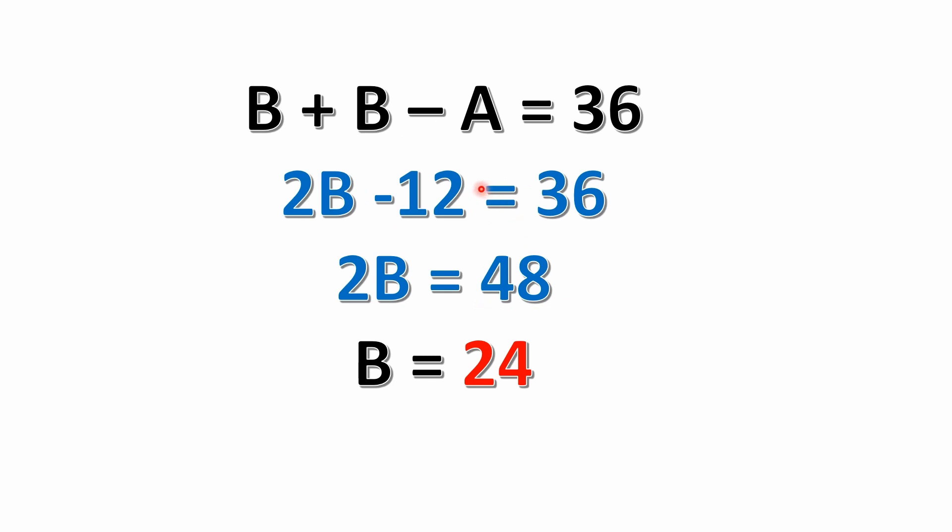Then from there, we have B plus B minus A equals 36. Well, B plus B equals 2B. We already know that A equals 12. So we have 2B minus 12 equals 36.